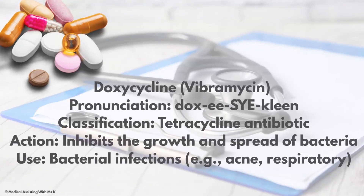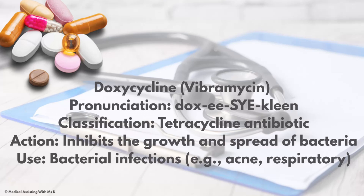Vibramycin — the generic is doxycycline. Notice that pronunciation. Classification: tetracycline antibiotic. There are different types of antibiotics — we know they treat bacteria, but the way each one works in the body is different. That's why you'll see tetracycline antibiotics, penicillin antibiotics, and multiple other types. The action: it inhibits the growth and spread of bacteria. Use: bacterial infections.